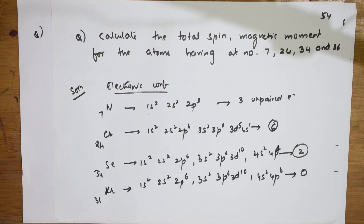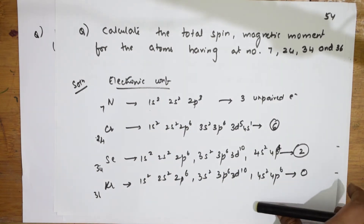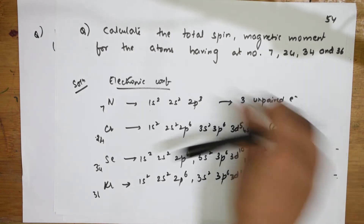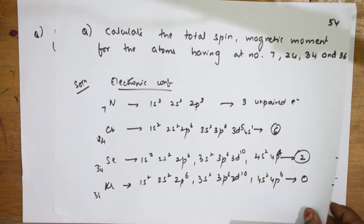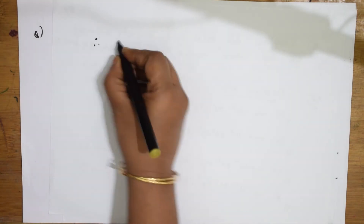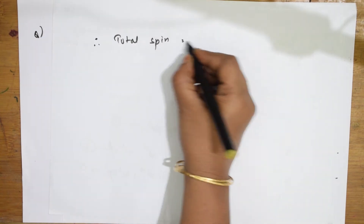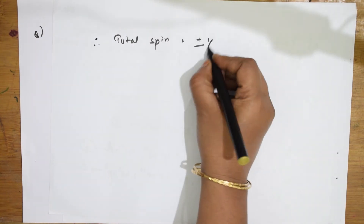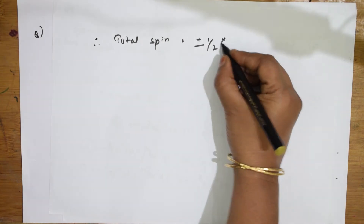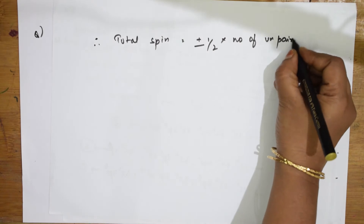Now I need to calculate the magnetic moment. They have also asked for total spin, which I will now calculate using the formula: total spin = ±½ × number of unpaired electrons.